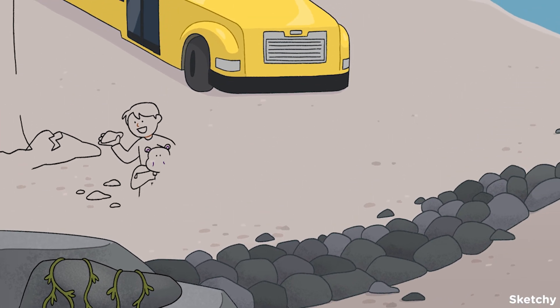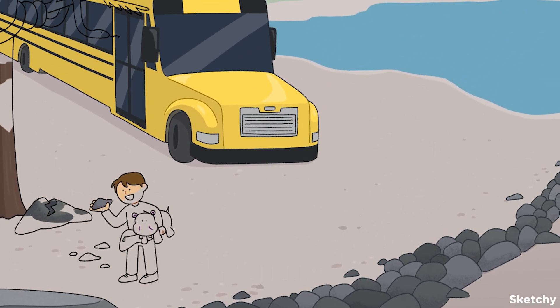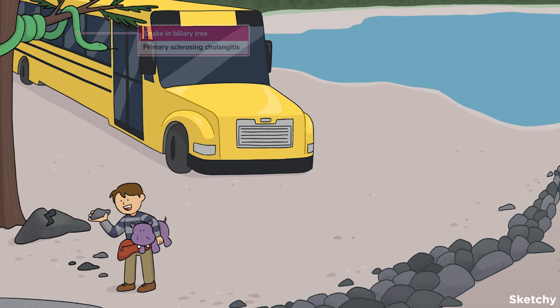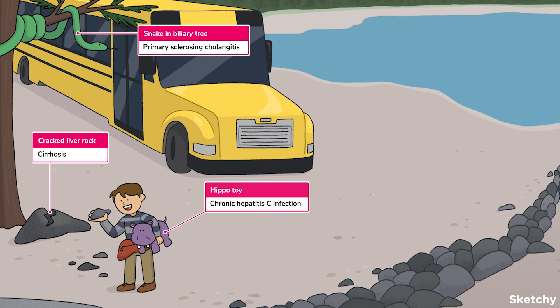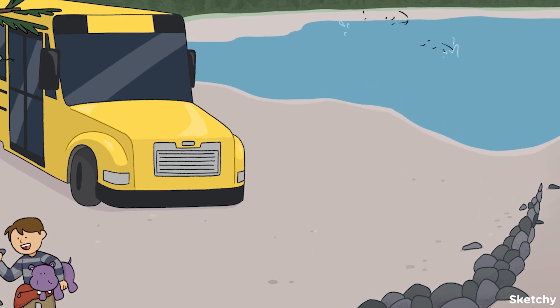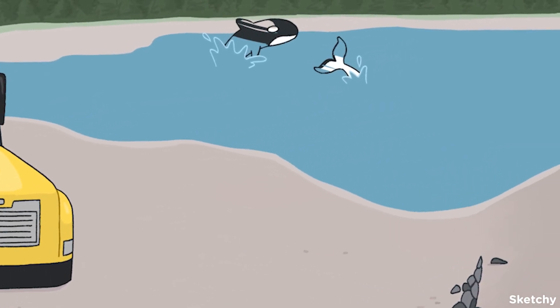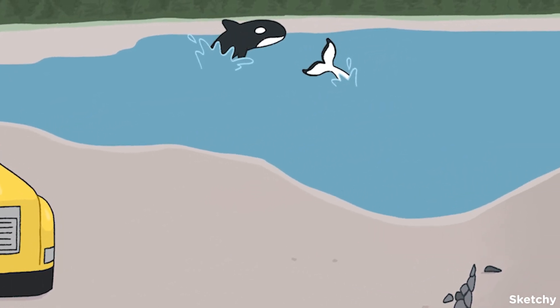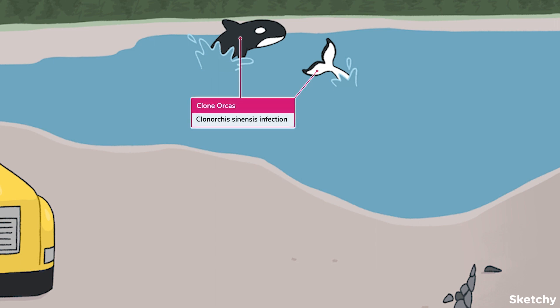Known risk factors for cholangiocarcinoma include primary sclerosing cholangitis, cirrhosis — including from chronic hepatitis C — and biliary cysts, which we'll get to in a moment. Another important risk factor is infection with the liver fluke.